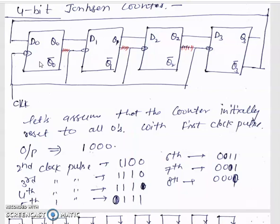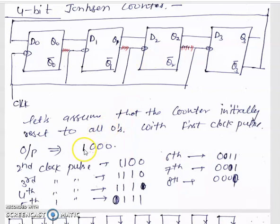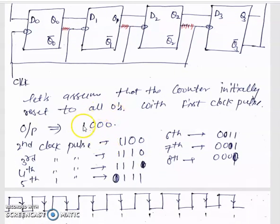Let's assume all flip-flops are initially in their reset state: Q0 = 1, Q1 = 0, Q2 = 0, and Q3 = 0. This means the first flip-flop is set and the remaining three flip-flops are in the reset condition. So the initial state is 1 0 0 0 — the outputs of flip-flops 1, 2, 3, and 4 respectively.